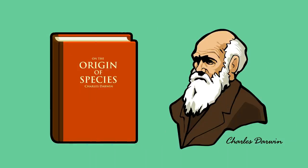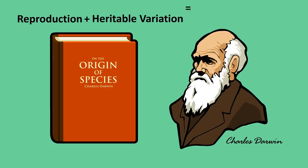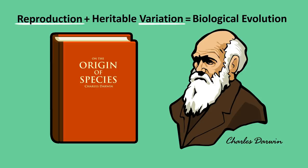Charles Darwin and those who continue his work have clearly shown that the process of biological evolution, sometimes called Darwinian evolution, is able to create highly complex structures and systems. The problem is, in order for biological evolution to work, you need to start with something that is able to make copies of itself and mutate — you need something capable of self-replication.